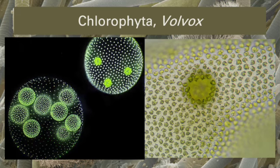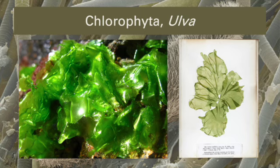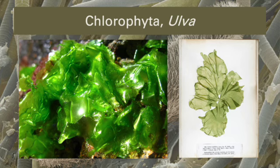Volvox is a colonial green alga. Inside the larger mother Volvox colony are the smaller daughter Volvox colonies. If the larger one ruptures, no big deal — the daughter colonies can persist independently. Ulva, also known as sea lettuce, is a multicellular green alga. Ulva was also our featured representative of isomorphic alternation of generations: the haploid and diploid phases of the life cycle appear identical — very different from what we will see in land plants.